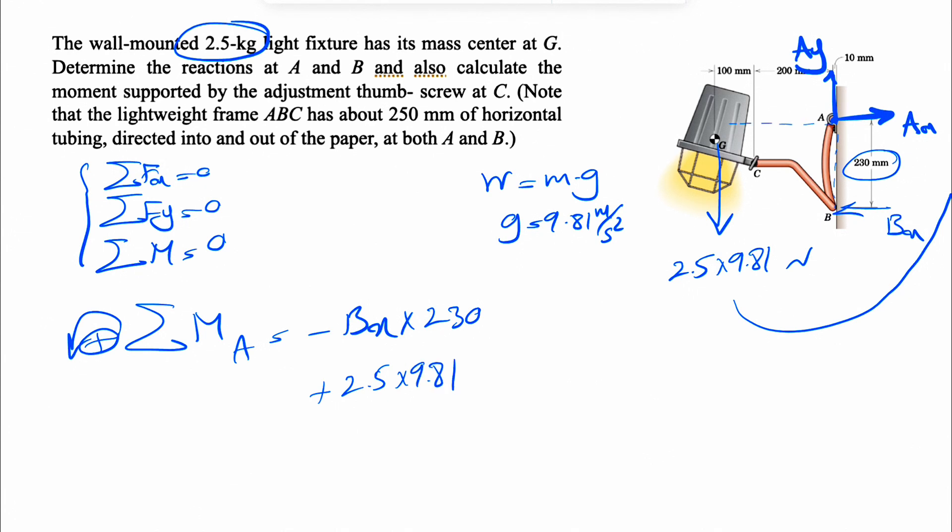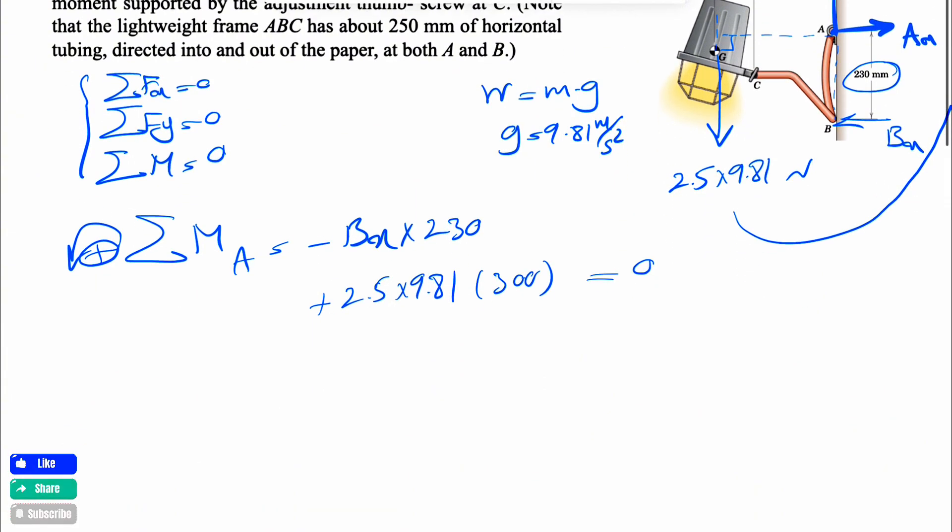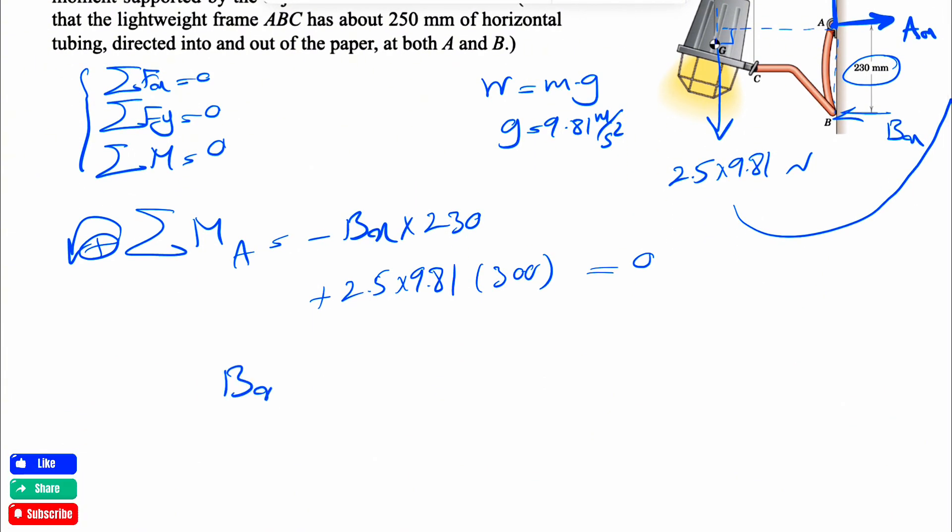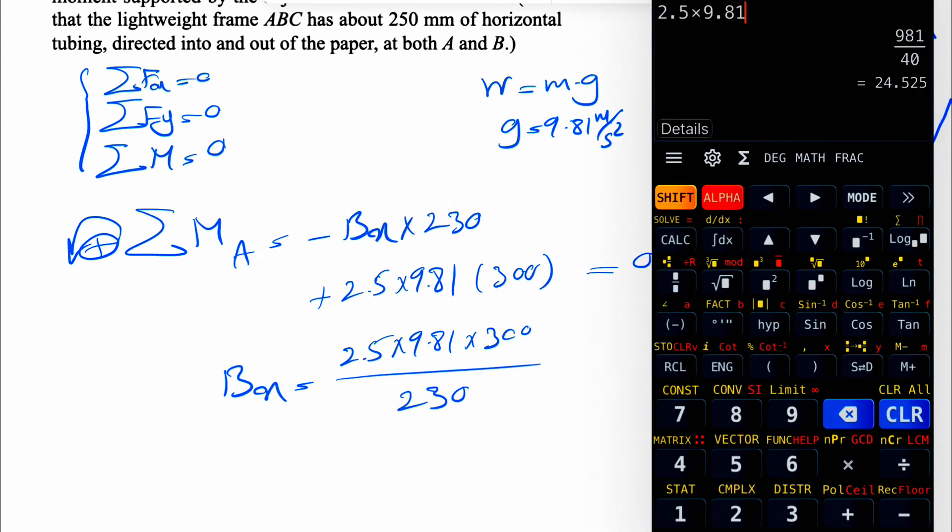The vertical distance from A to the line of action of the weight, which is 200 plus 100 or 300. This will equal zero. And we can find the first unknown BX, basically 2.5 times 9.81 times 300 divided by 230. 9.81 times 300 divided by 230, this is going to give us 31.99 Newtons.